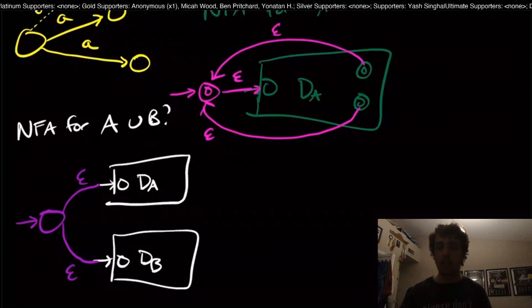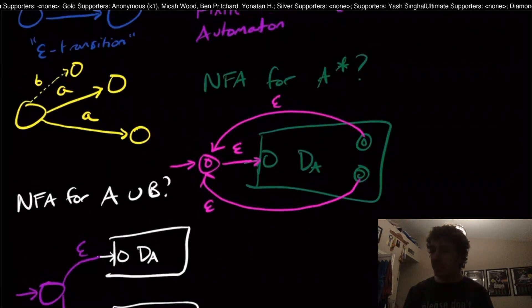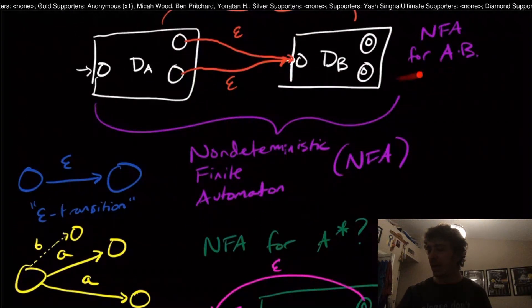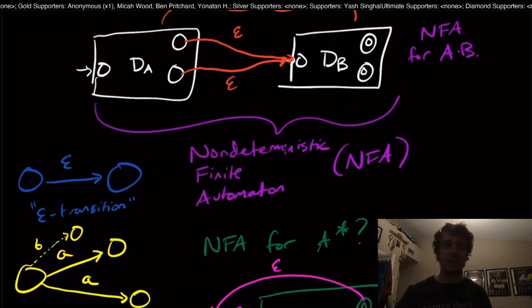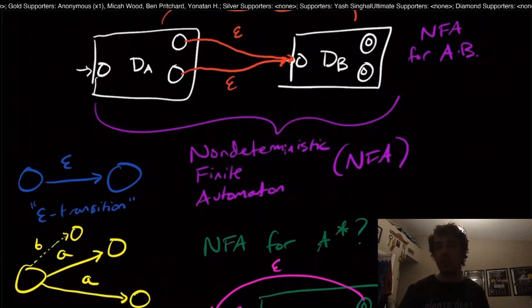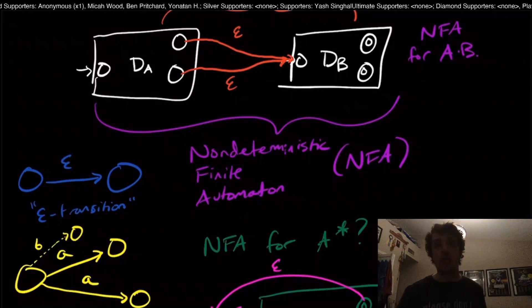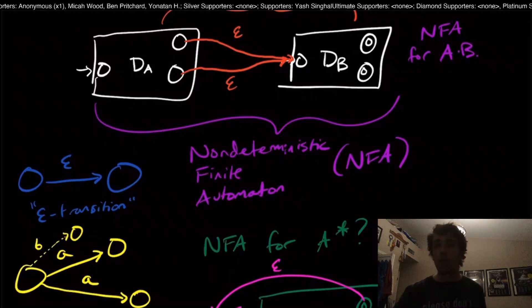One thing to note is that this does not show that the regular languages are closed under star and for concatenation, because we made an NFA here. We didn't make a DFA, and we haven't shown that NFAs are equivalent to DFAs. If they are, then they are closed under concatenation and star, but we haven't shown that yet, and that's something that will eventually show at some point.